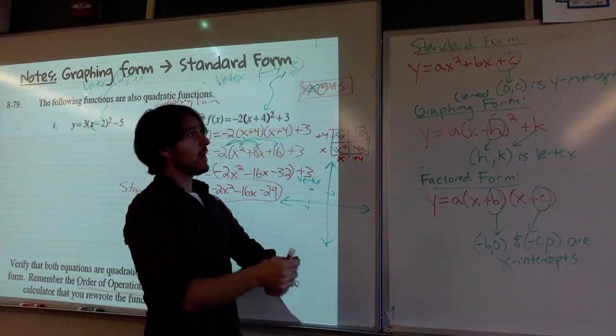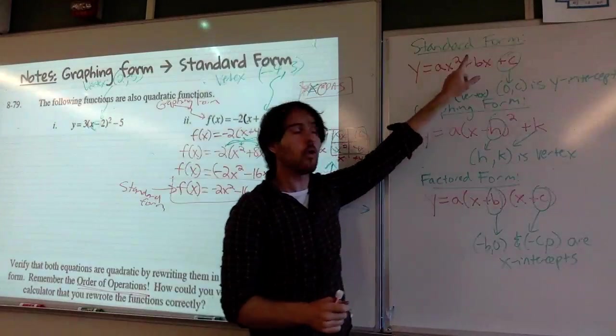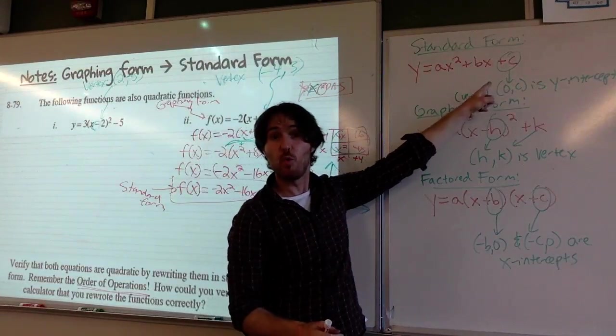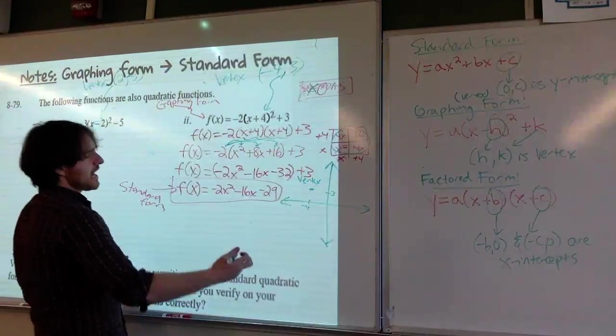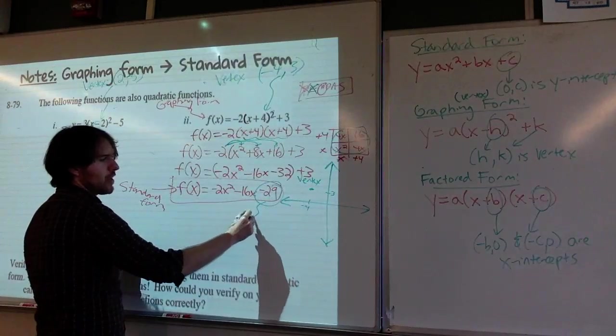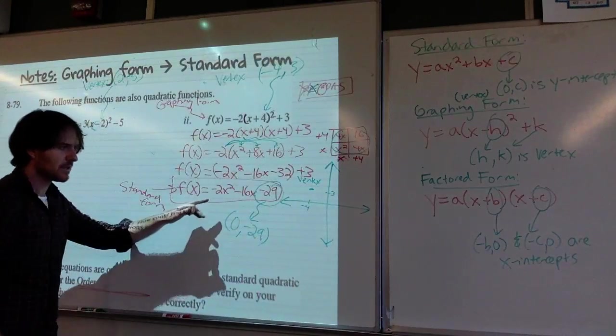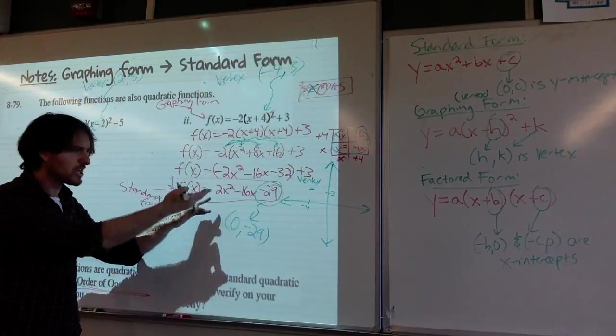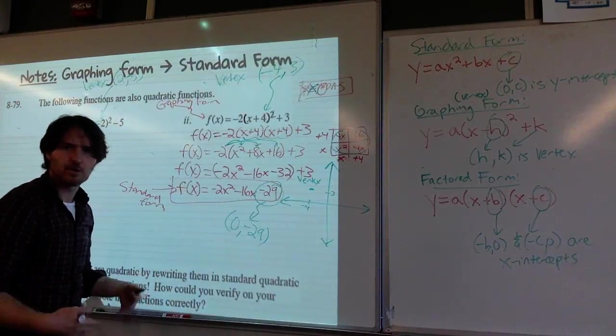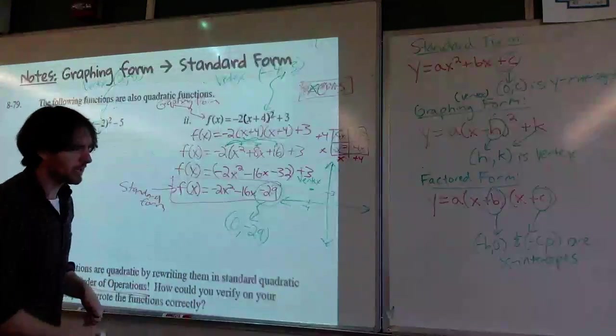We started with this in graphing form so we can pick up the vertex. I've already put that on my graph. And I've rewritten this in standard form here. And what's good about standard form? Graphing form was good to get me the vertex. Standard form was good to get me the y-intercept. So I can take this: (0, -29). If I plug in zero here, -2 times 0 squared would just be 0, -16 times 0 would just be 0. So the value of y when x equals 0 is -29.